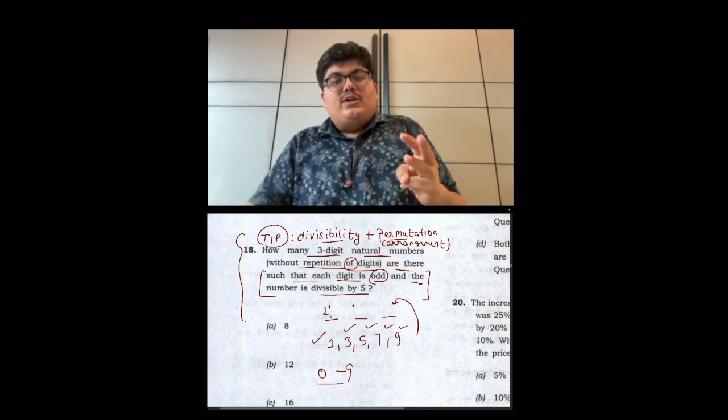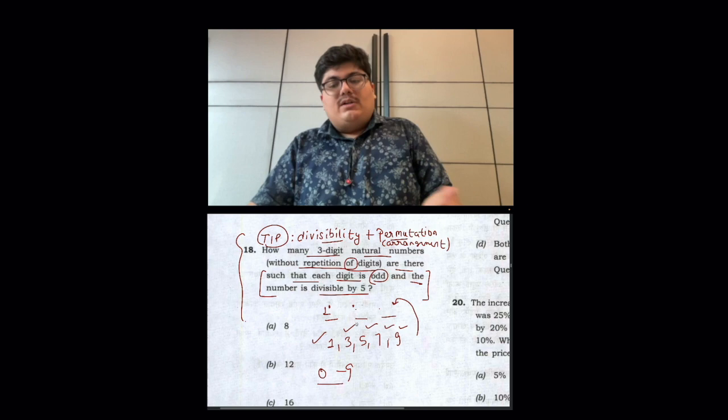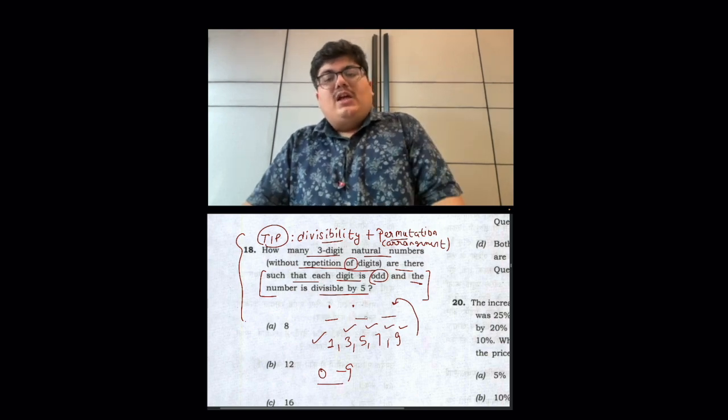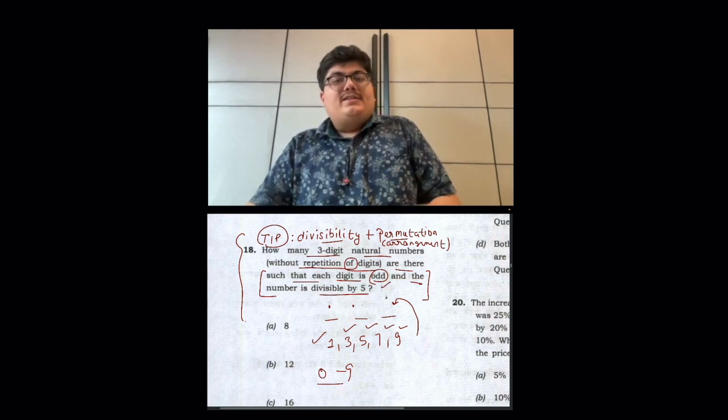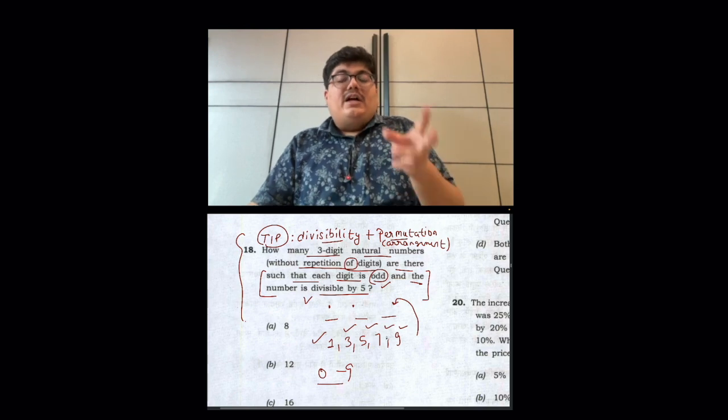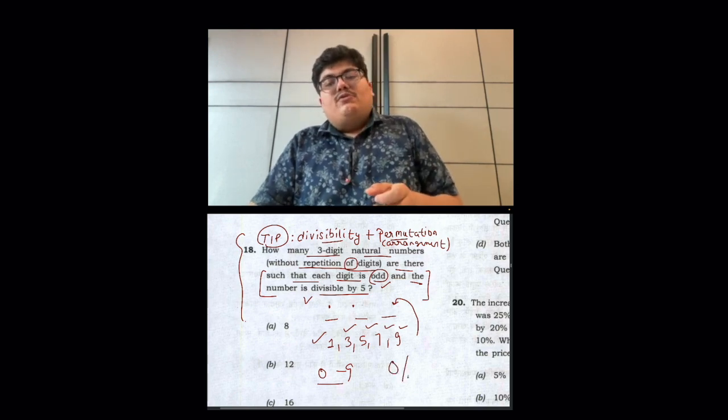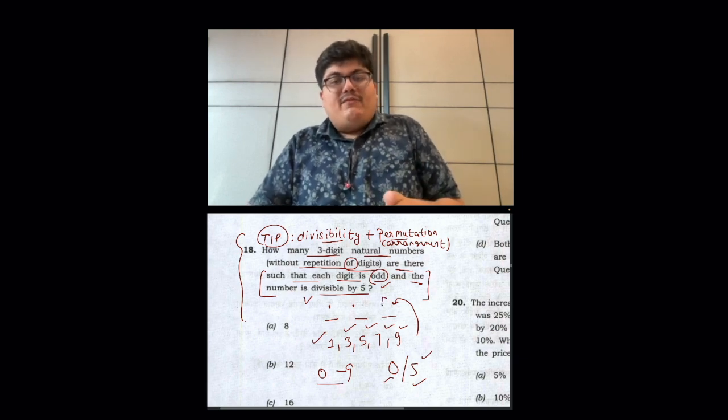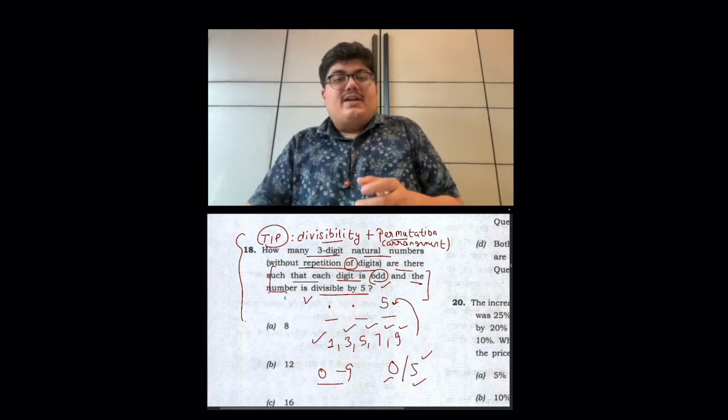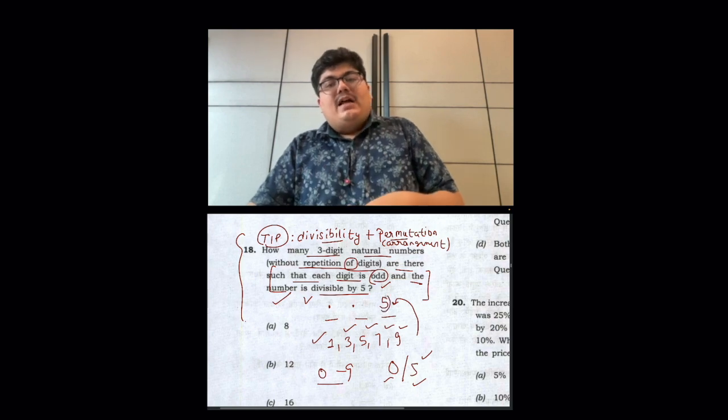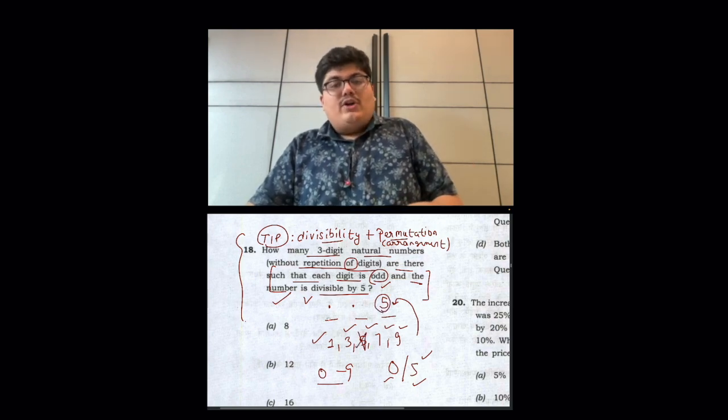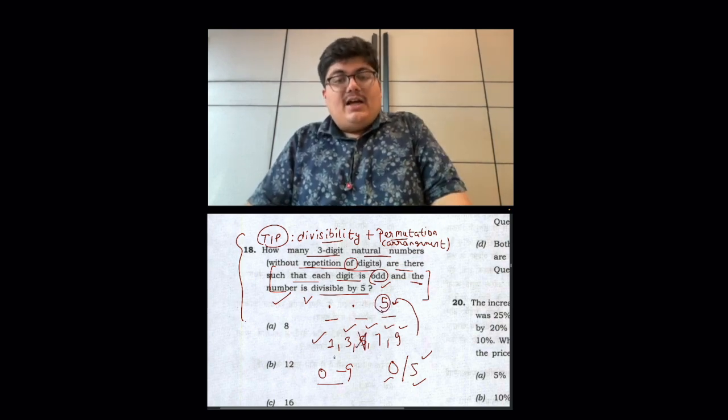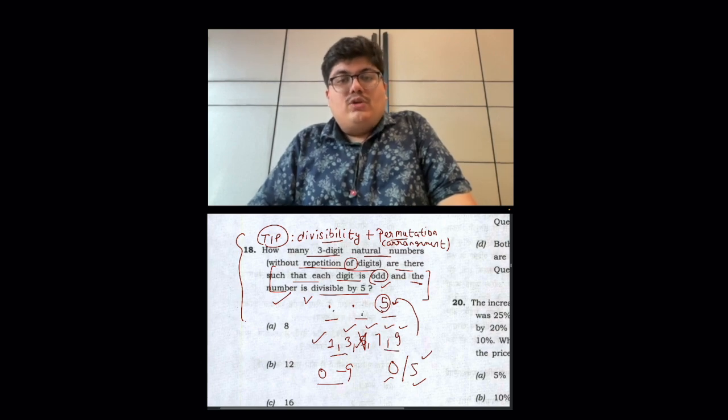This means we have to put one here, without repetition. When we use this logic, understand the first condition is odd. The second condition is divisible by 5. If it is divisible from 5, then how should it be? Whether it is 0 or 5. If it is 0 or 5, it is odd. And the odd number is fixed here. The second condition is given here. The second condition is 5. It is fixed here. Now between 1, 3, 7, 9, we have to put two numbers.